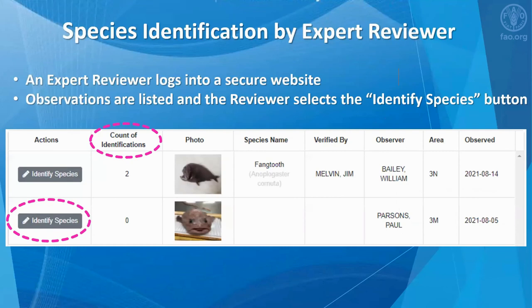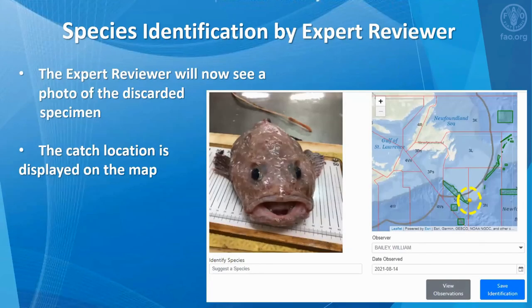What is in scope for this presentation is a secure website for species identification by an expert reviewer. An expert reviewer will log into a secure website. The hope is that the expert reviewer from one of NAFO's 24 member flag states will help identify the species. Observations are listed with the current count of identifications made by other expert reviewers. The reviewer will select the identify species button.